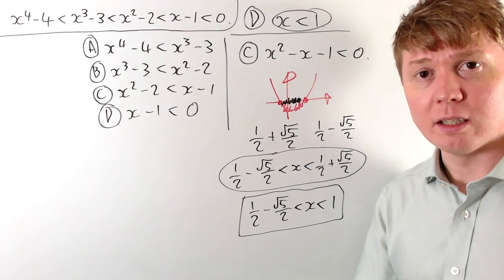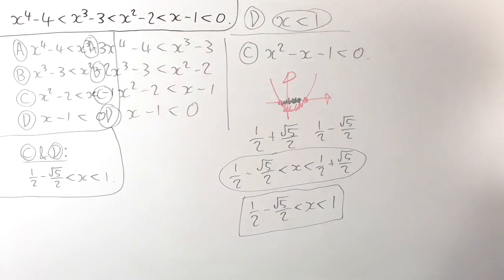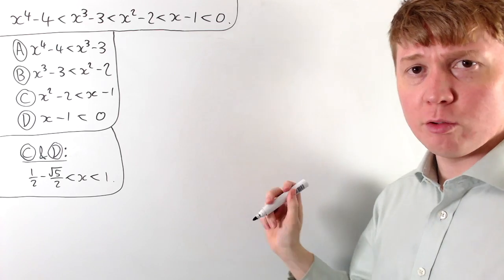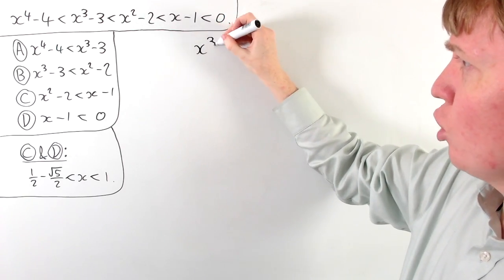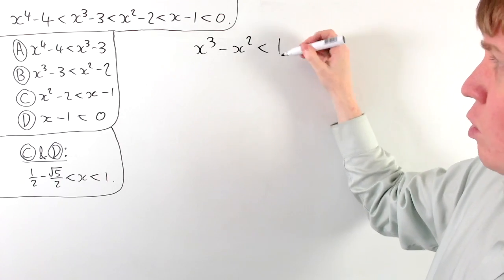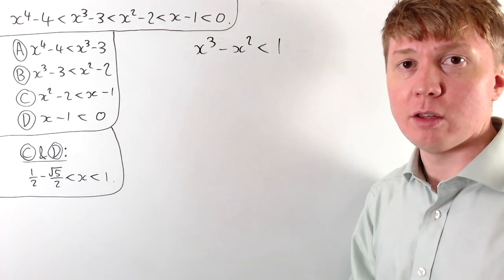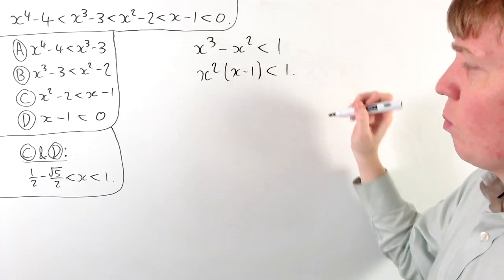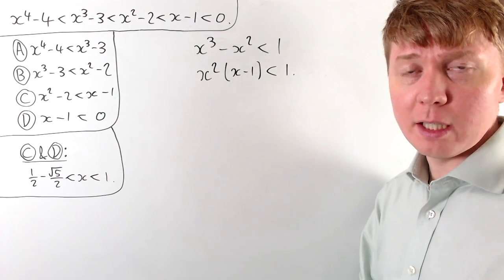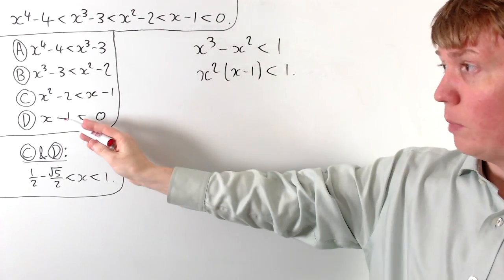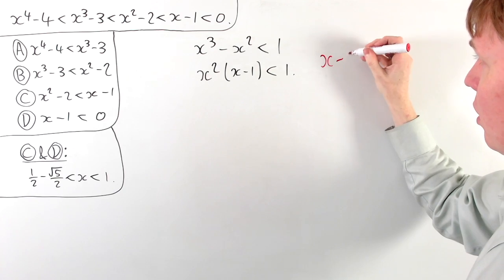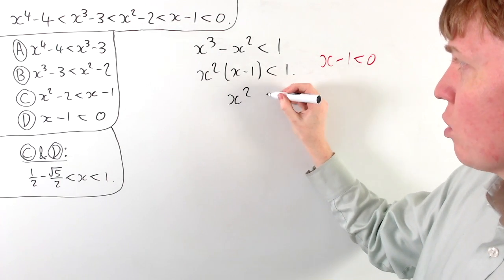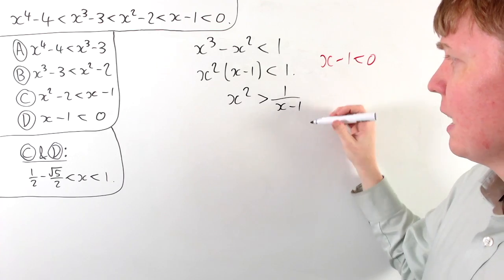Now let's combine inequality B. Rearranging B by subtracting x squared and adding 3 to both sides, we get x cubed minus x squared is less than 1, which factorises as x squared times (x minus 1) is less than 1. We then divide by x minus 1, and notice that x minus 1 is always negative here, so dividing flips the inequality sign, giving x squared is greater than 1 over (x minus 1).